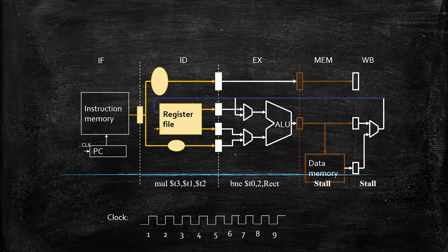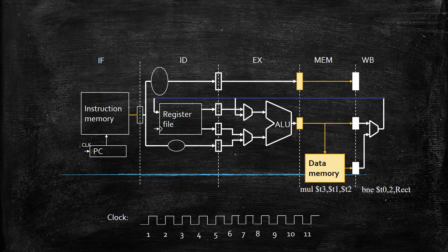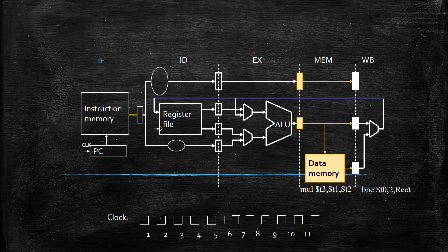In the ninth clock cycle, the multiplication instruction and other instructions propagate through the pipeline. In the tenth clock cycle, the multiplication instruction enters the execution stage and multiplication is performed. The result of the multiplication is stored in register T3. So it takes eleven clock cycles in total because of the branching statement. In MARS simulator, the branching statement includes an add immediate statement, which adds an extra one clock cycle.